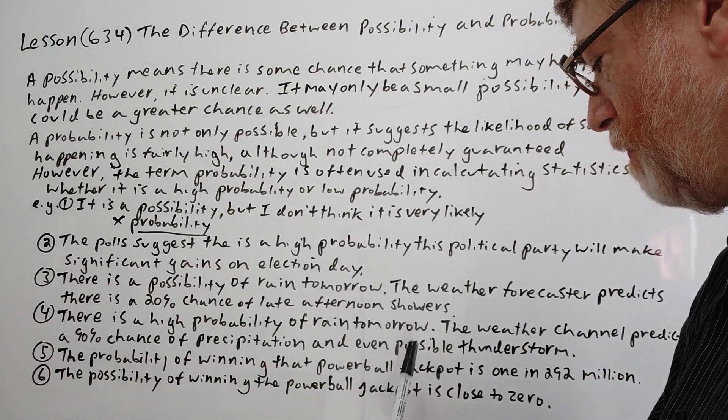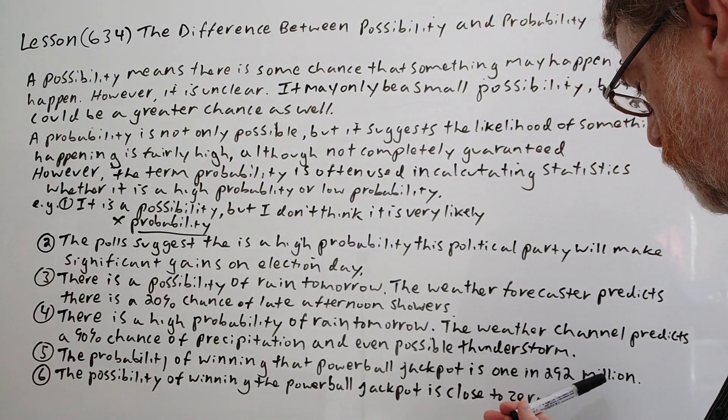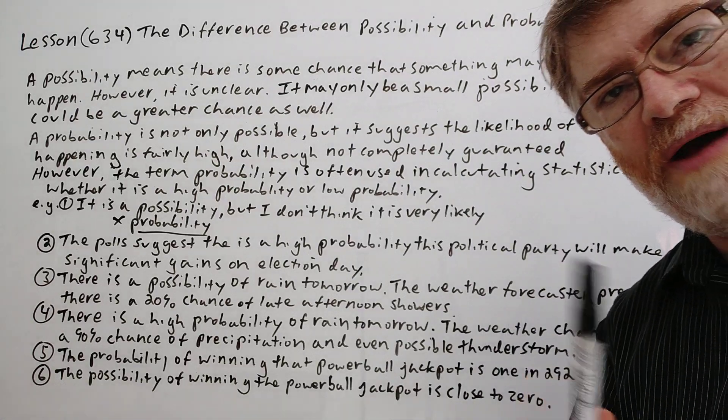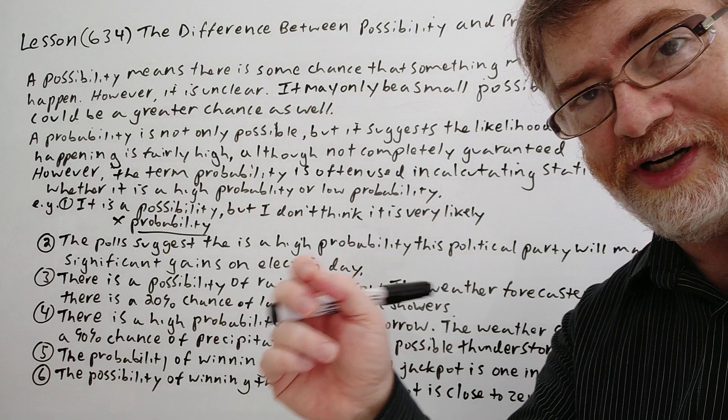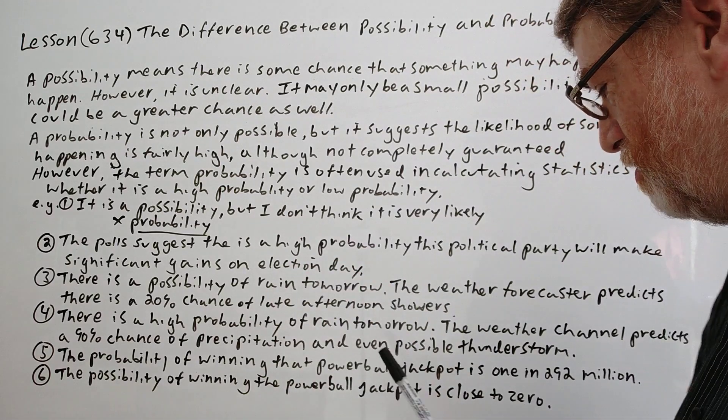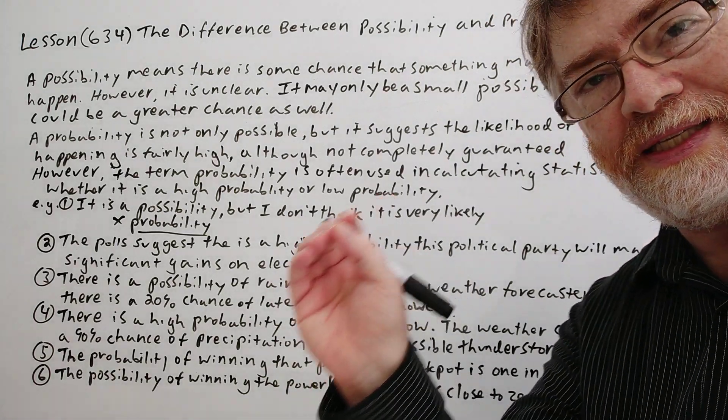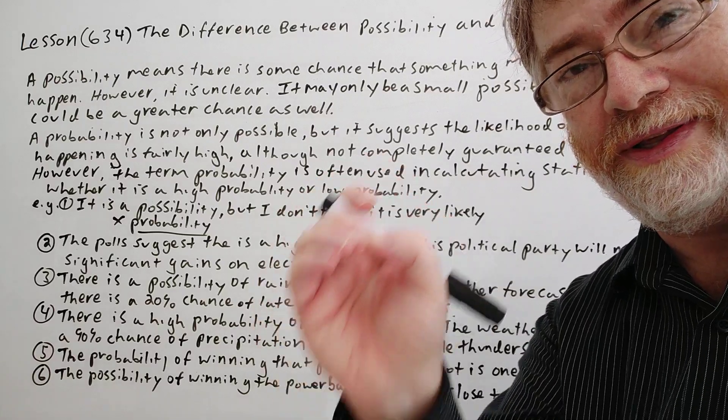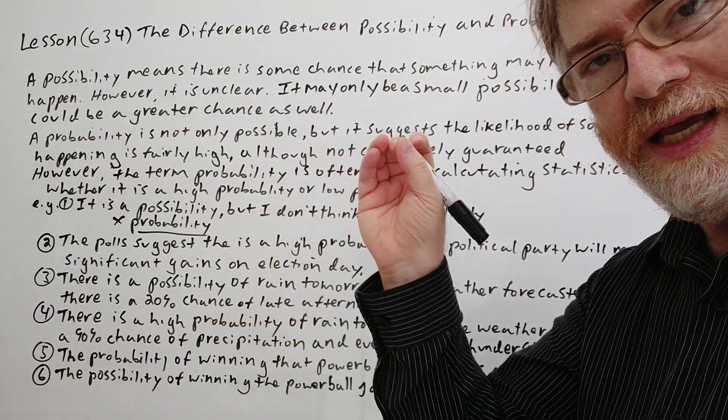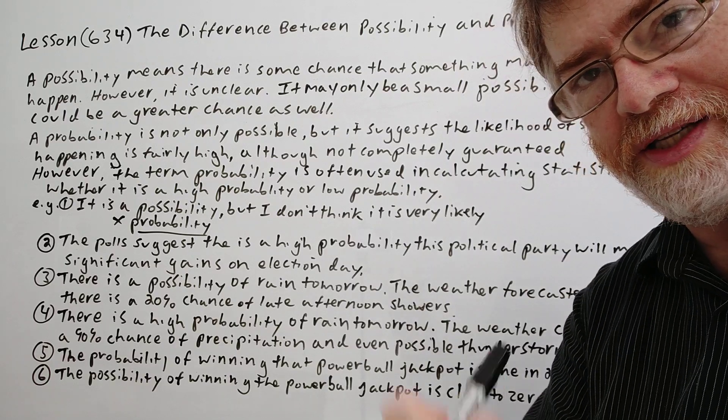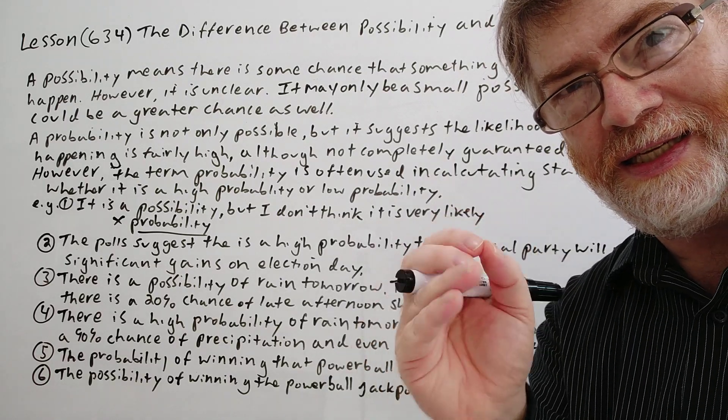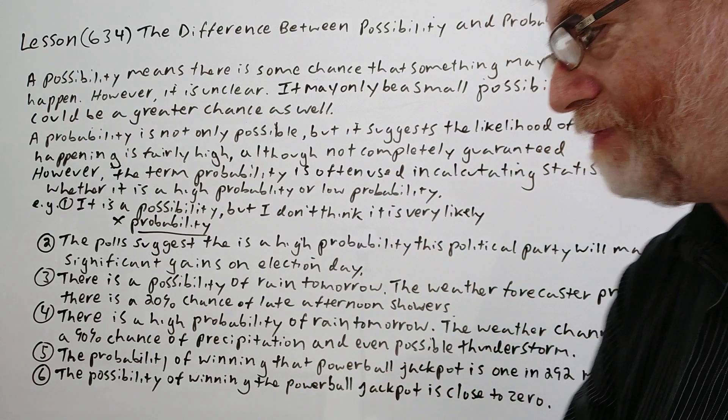The probability of winning a Powerball jackpot is one in 292 million. Now here, one in 292 million is a very small chance, but they're using it from this: they're giving you the statistical data, they're giving you actually the real numbers, one in 292 million. So that's why they use probability here because they're really using the statistical average or data.